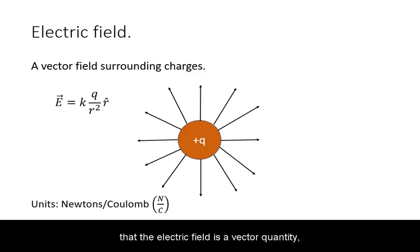Recall that the electric field is a vector quantity surrounding charges measured in newtons per coulomb. In vector diagrams, it is represented by arrows pointing away from positive charges.